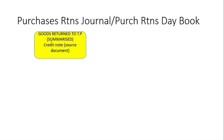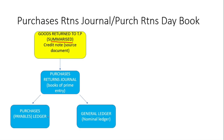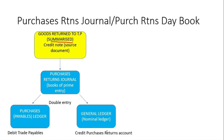These transactions are going to be summarized and then put into our Purchases Returns Journal. By having all the information we're going to be able to put them into our two ledgers — one will be the Payables Ledger and the other will be the General Ledger. For the Payables Ledger we're going to debit Trade Payables, and for the General Ledger we're going to credit the Purchases Returns Account.